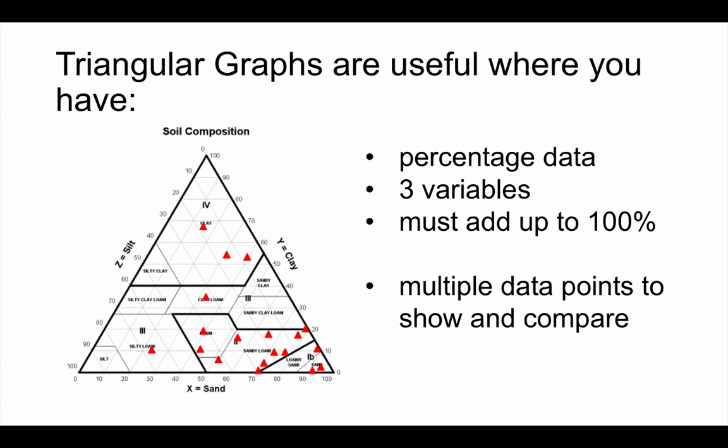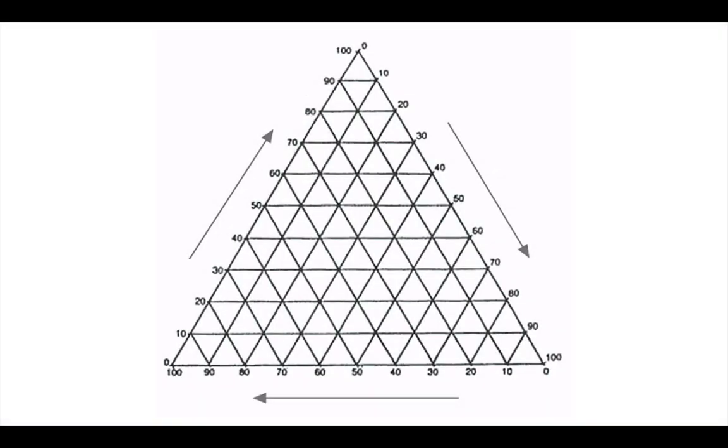Let's look at how we actually go about plotting these. This is a blank triangular graph. You'll see there are three axes here, marked with these arrows. Now, these three axes can be lots of different variables. For this example, though, I'm going to stick to fairly simple sand, silt, and clay to show how grain size, for example, or grain sorting within a sediment could be shown on a triangular graph.